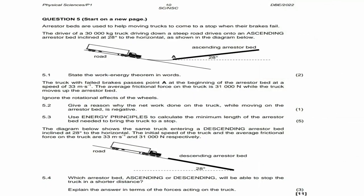5.3 says: use energy principles to calculate the minimum length of the arrestor bed needed to bring the truck to a stop. The minimum length is the displacement. To bring it to a stop, the final velocity vf must be zero meters per second. The initial velocity vi is 33 meters per second. Remember, since they asked us to state the work-energy theorem, we should also use it for the calculation.